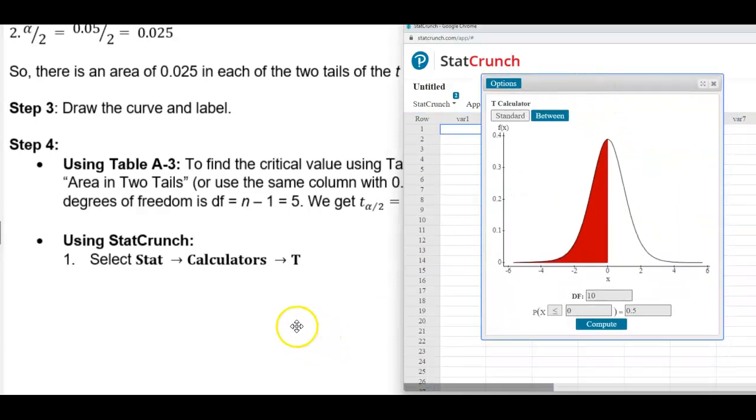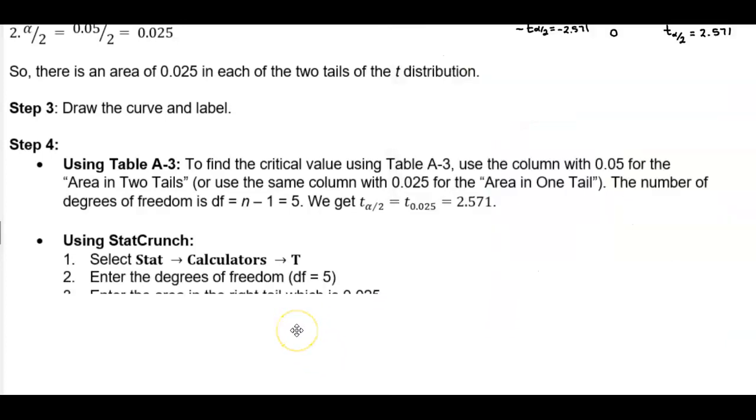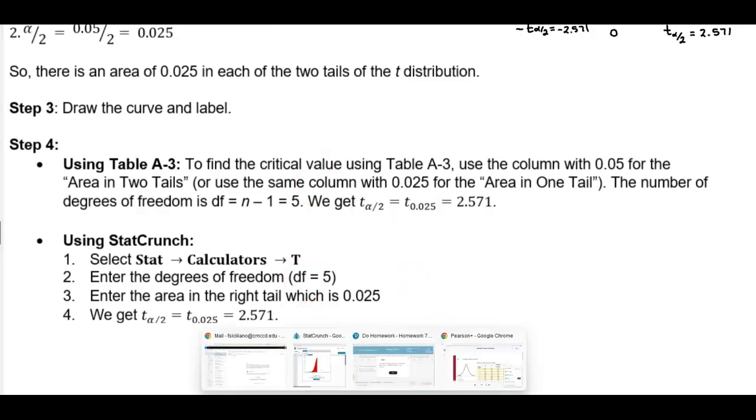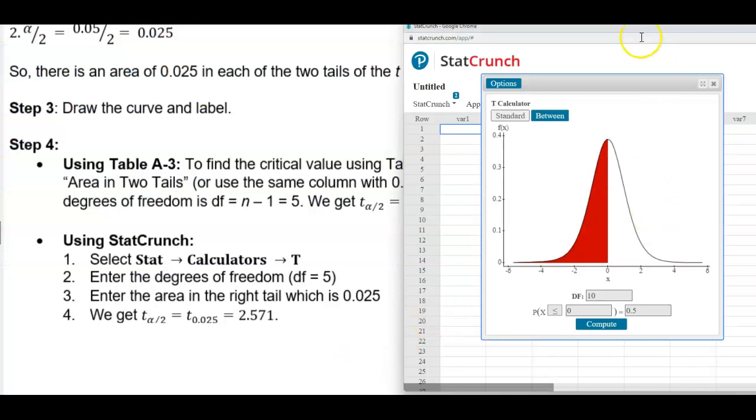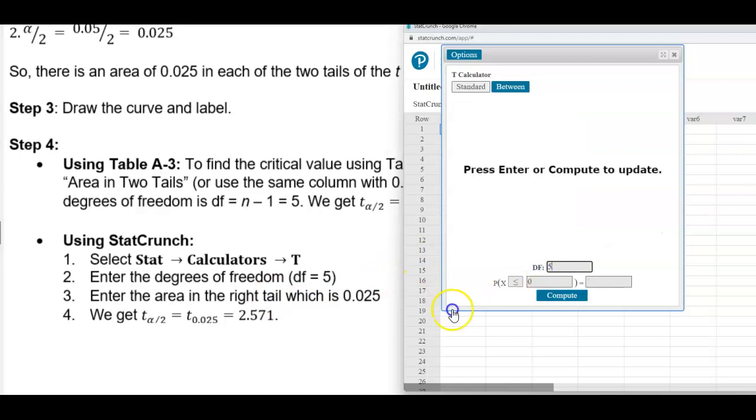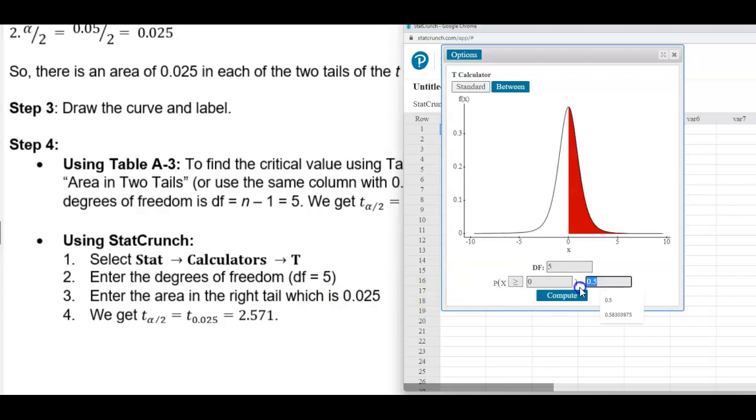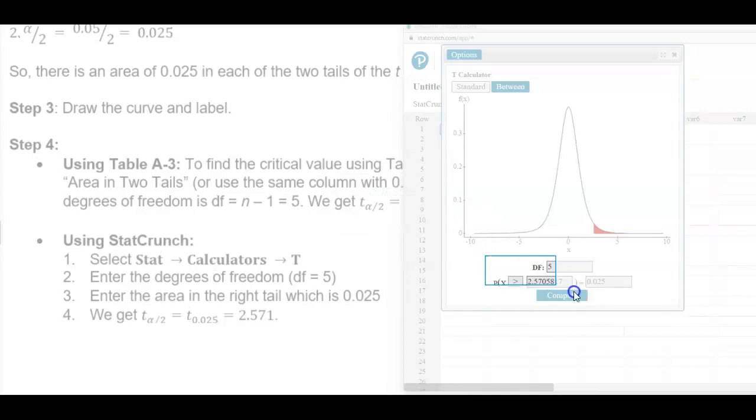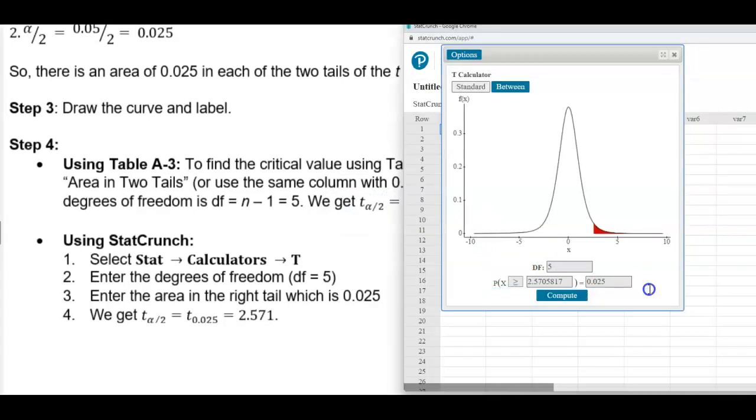The next step is to enter the degrees of freedom and enter the area in the right tail, which is 0.025, because that's what we're looking for. We're trying to find the critical value on the right side. We enter the degrees of freedom to be 5, make sure we select greater than, and then put in the area which is 0.025. Then we select Compute, and you're going to see what we get for our critical value.